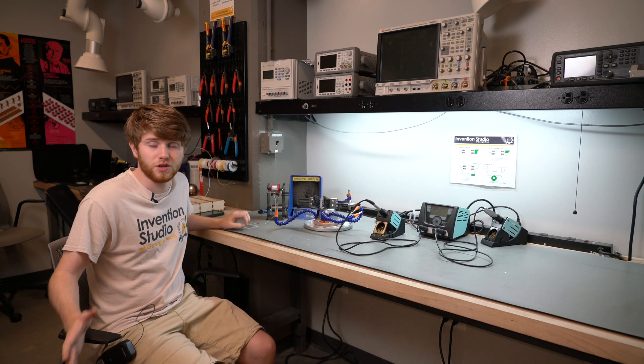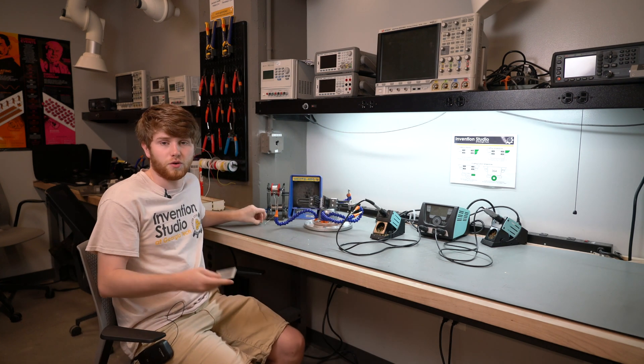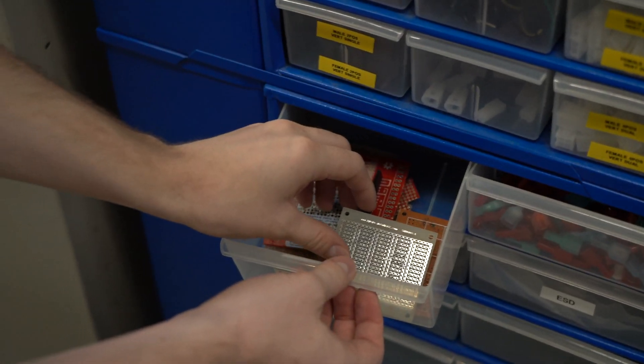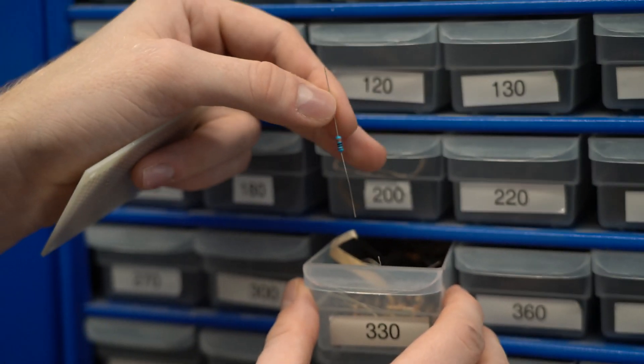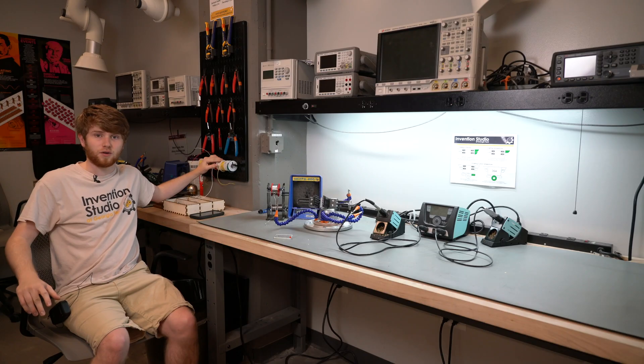First step, what you're going to want to do is collect the components you need for the test. You need to collect a protoboard, a 330 ohm resistor, an LED, and wire that you can get from this rack right here.